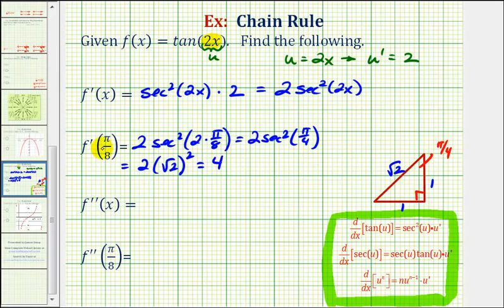If the first derivative is equal to 4 at x equals pi over 8, that means the slope of the tangent line would be 4 at that point, and also since the derivative is positive, the function is increasing at x equals pi over 8.